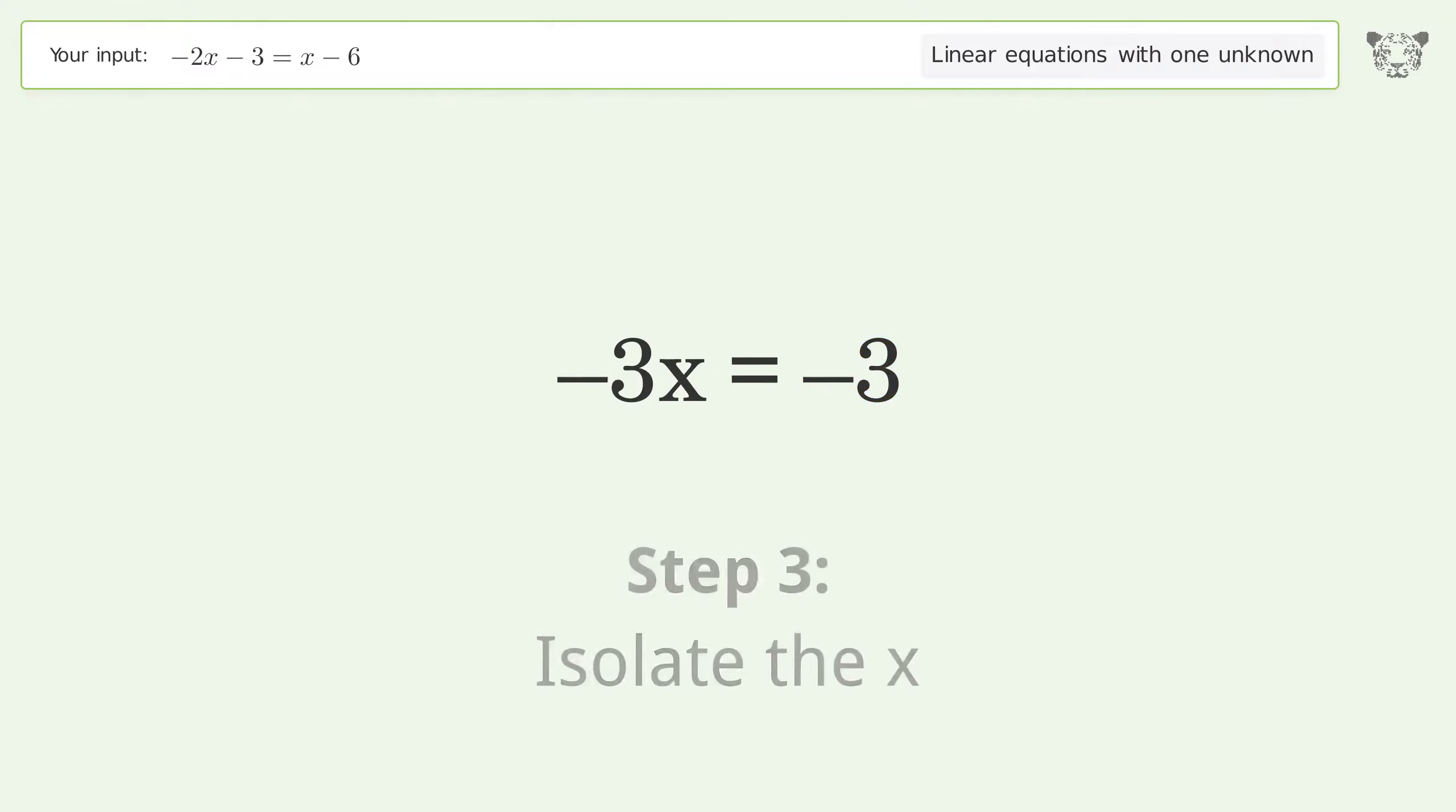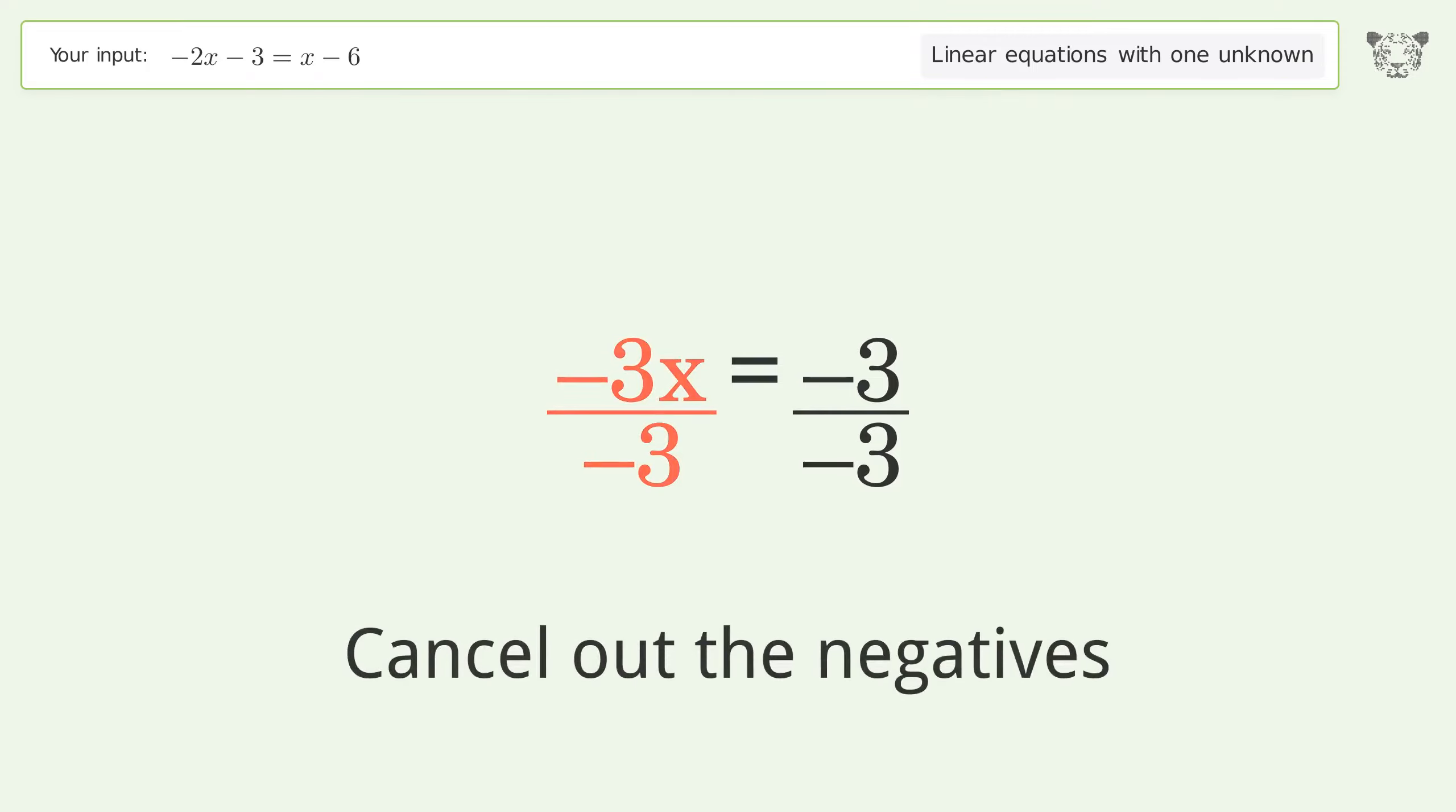Isolate the x. Divide both sides by negative 3. Cancel out the negatives. Simplify the fraction.